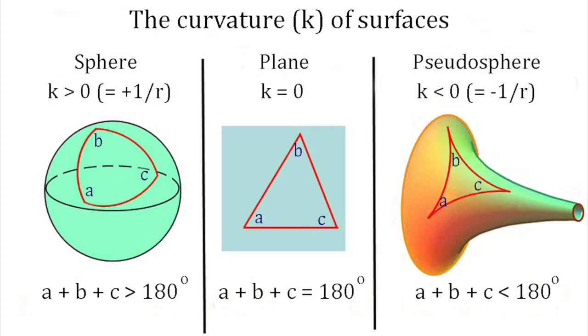Another result of the pseudosphere's negative curvature is that the angles of a triangle drawn on its surface add up to less than 180 degrees. On a sphere, a triangle's angles sum to more than 180 degrees.